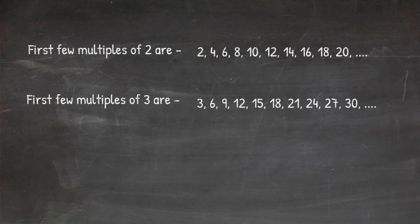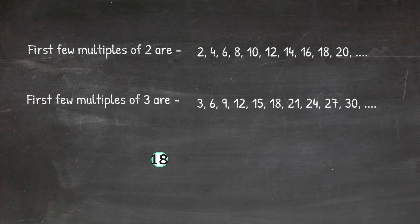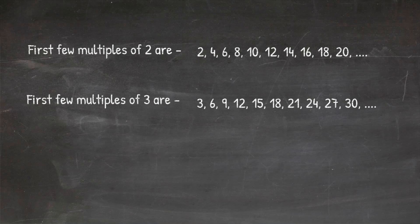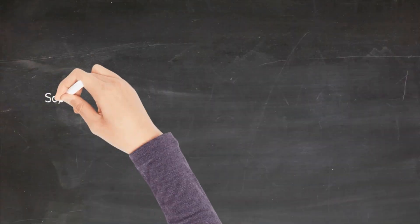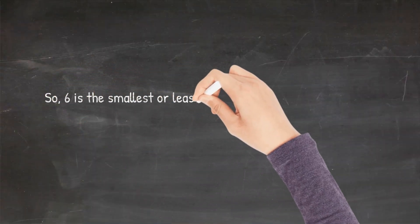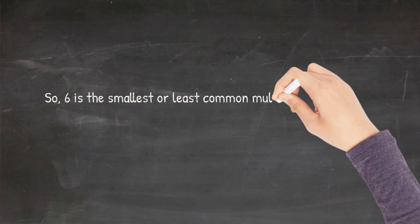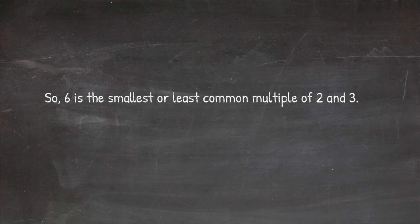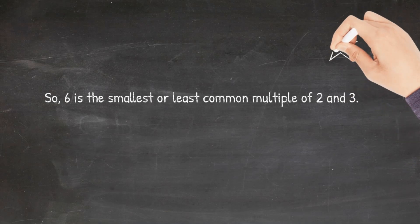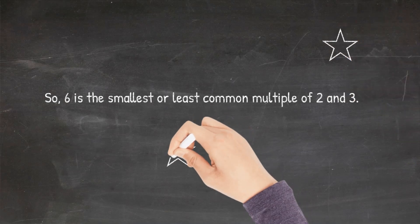What are the common multiples for 2 and 3? Yes — 6, 12, and 18. And out of these common multiples, which multiple is the smallest? Bingo! 6 is the smallest. Therefore, 6 is the least common multiple for the numbers 2 and 3.